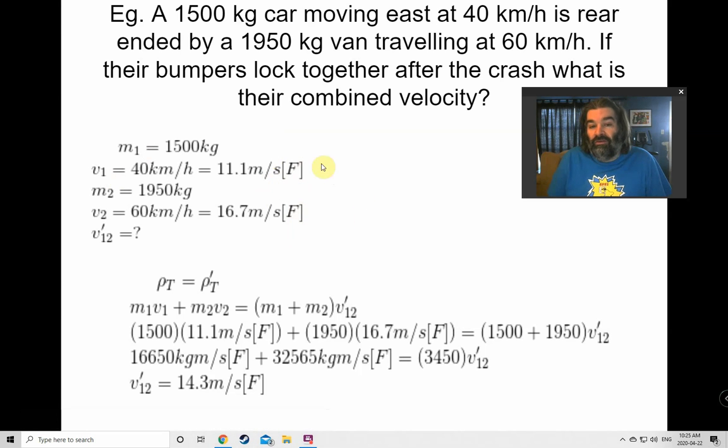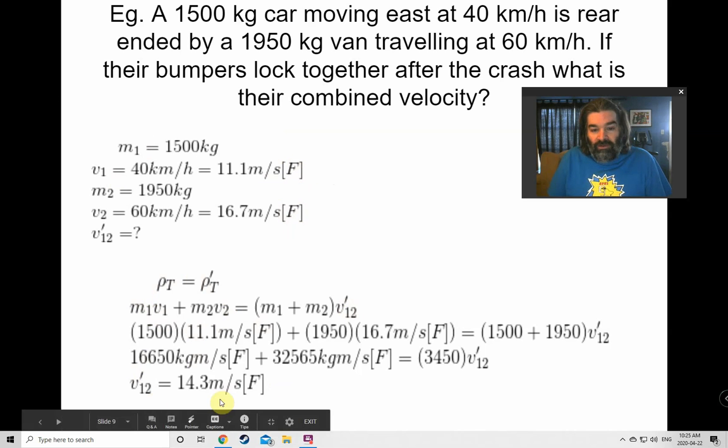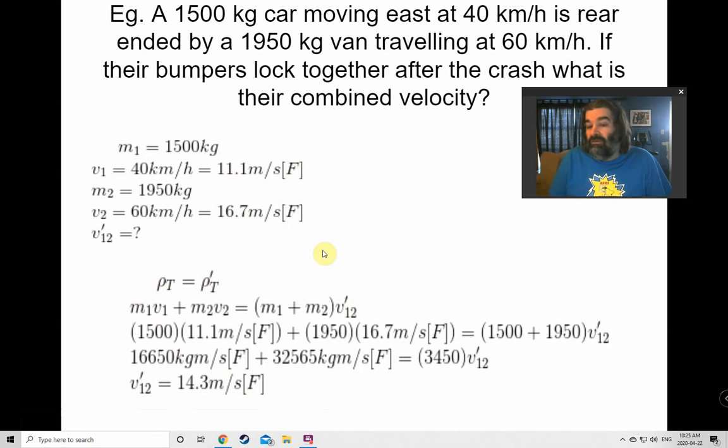Write out our equation. Plug in the numbers. And you find their combined velocity is actually 14.3 meters per second. So slightly slower than this van, but slightly faster than the first car was moving.